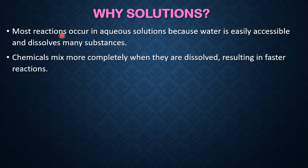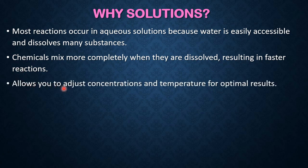Chemicals mix more completely when dissolved, resulting in faster reactions. We can always adjust concentration and temperature for optimal results. Whenever we prepare solutions, we decide how concentrated or how weak a solution we require. Depending on our requirement, we can change the concentration, and by increasing or changing the temperature, we observe what happens to the concentration. We carry out reactions in solutions to know concentration under specific conditions.